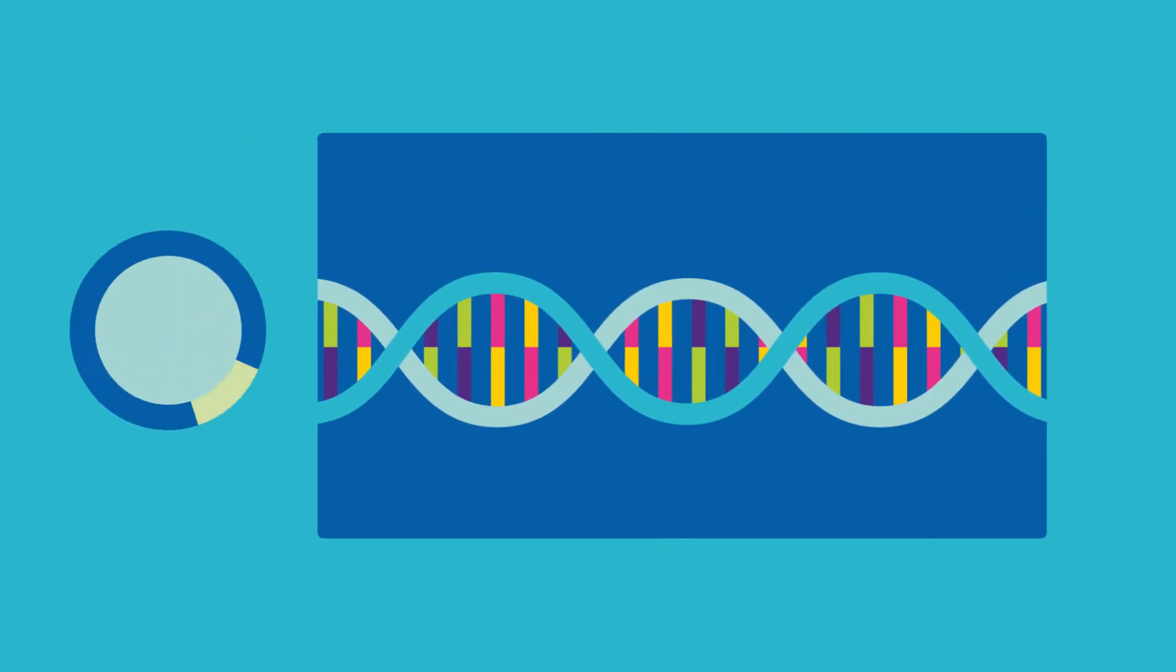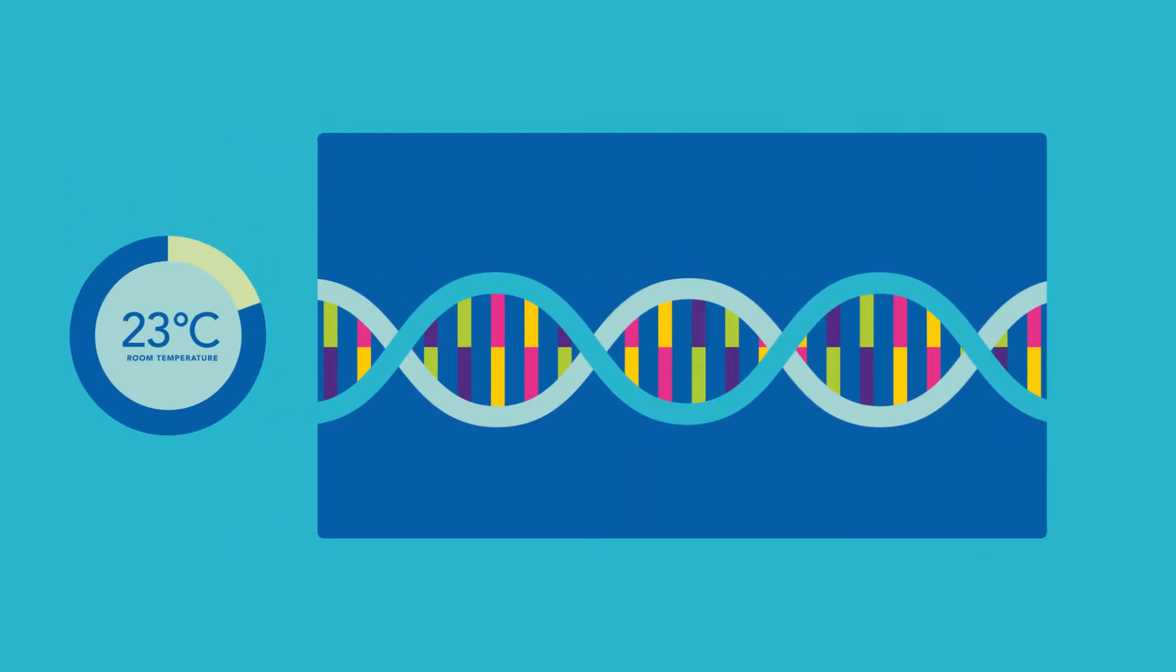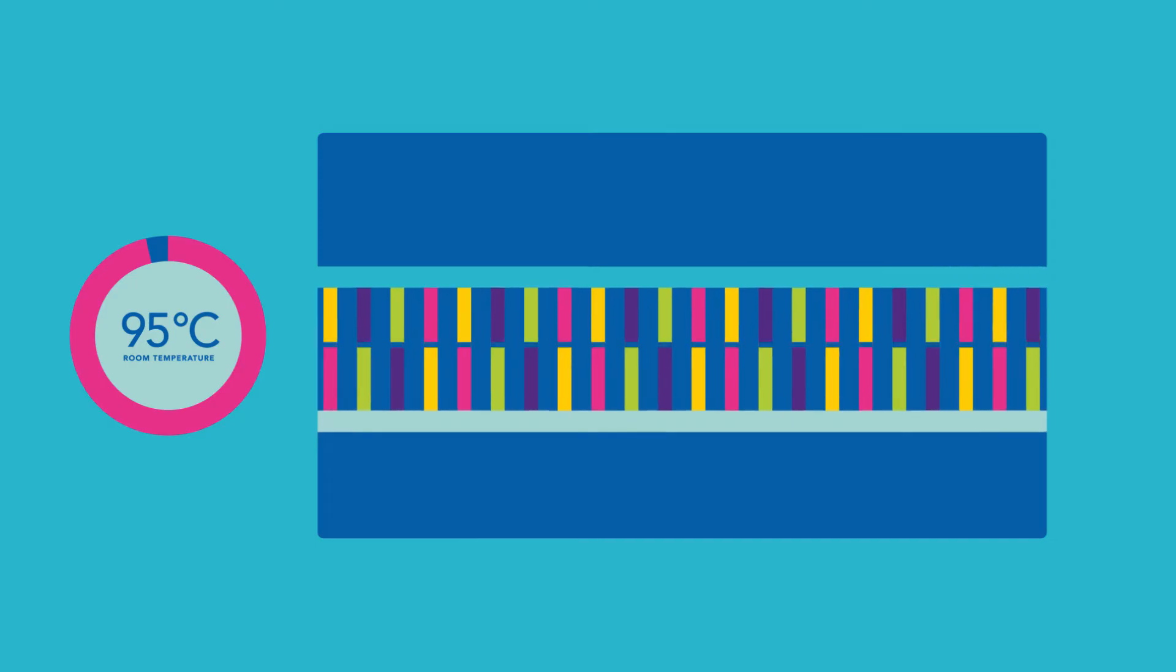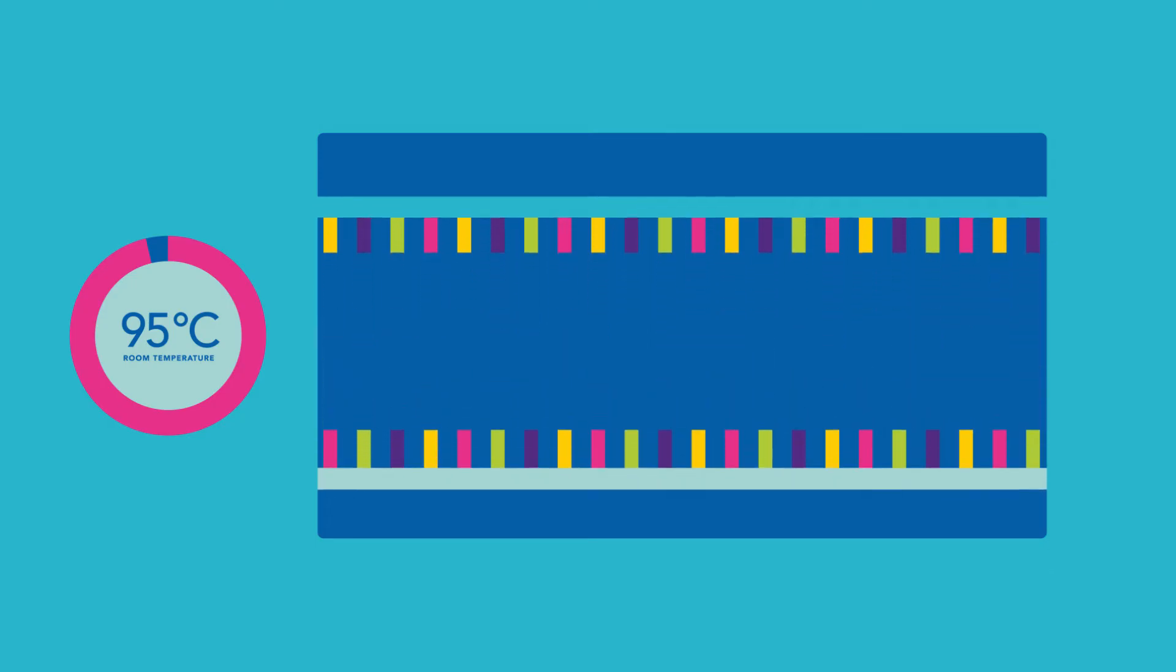Denaturation is the first step in the PCR reaction. The thermocycler heats up to roughly 95 degrees Celsius, which causes the double-stranded DNA helix to melt open into two single-stranded DNA templates.